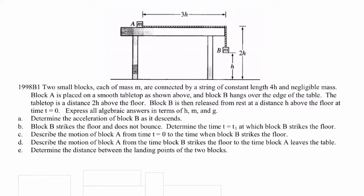Two small blocks, each of mass m, are connected by a string of constant length 4h and negligible mass. Block A is placed on a smooth tabletop, and block B hangs over the edge. The tabletop is 2h above the floor. Block B is released from rest at distance h above the floor at time t=0. Express all algebraic answers in terms of h, m, and g. Part A: Determine the acceleration of block B as it descends.